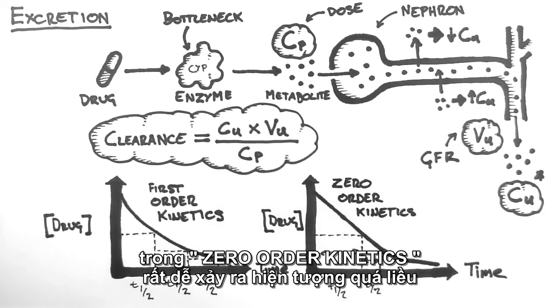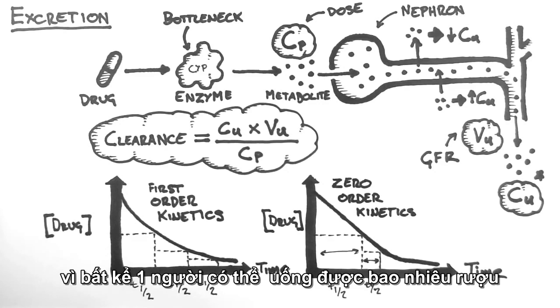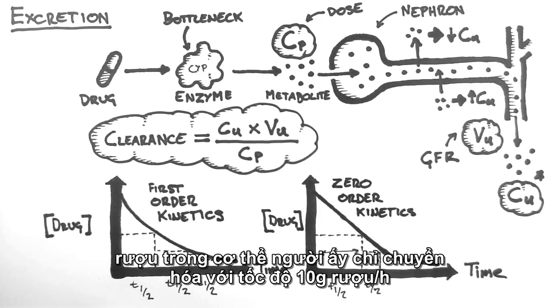Drugs with zero-order kinetics are more easily overdosed because the rate of excretion doesn't increase with increasing dose. Ethanol is an example of a drug with zero-order kinetics, which is why no matter how much someone drinks, they will only metabolize about 10 grams of alcohol per hour.